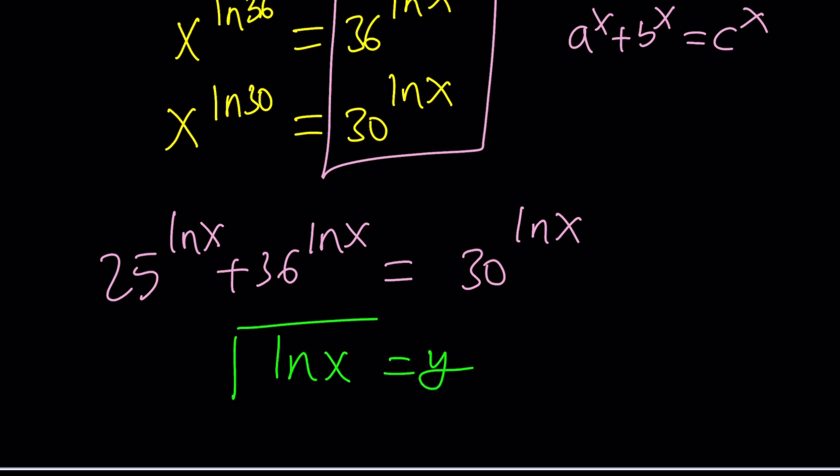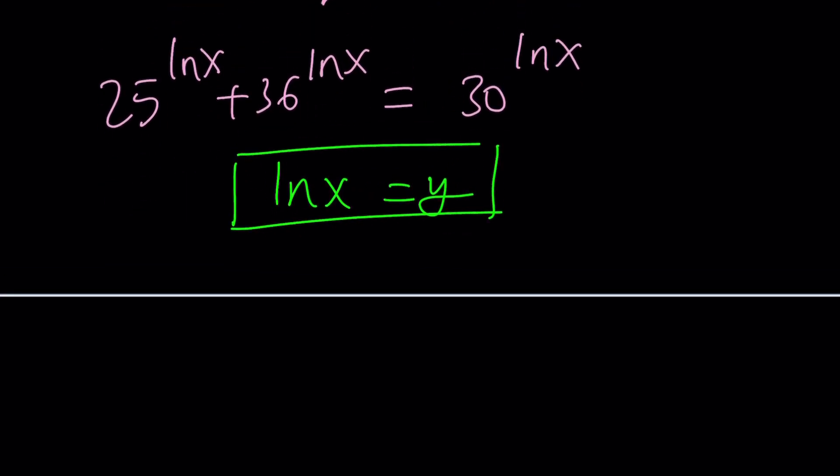But before I do it, allow me to use substitution because substitution is awesome. Why don't we call ln x equal to y? Don't question. Don't ask why. So now we have 25 to the power y plus 36 to the power y equals 30 to the power y.